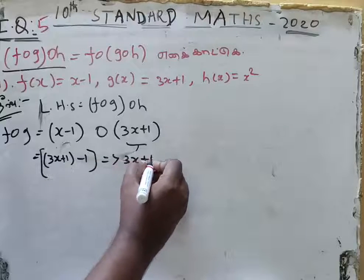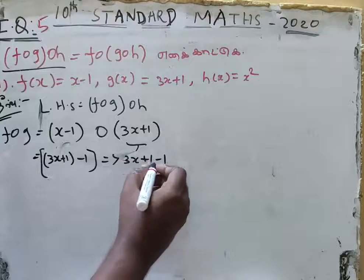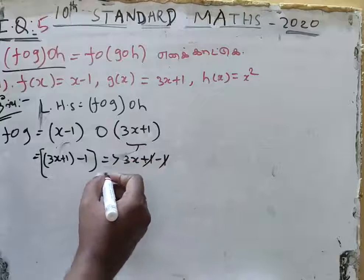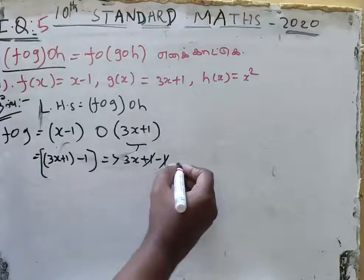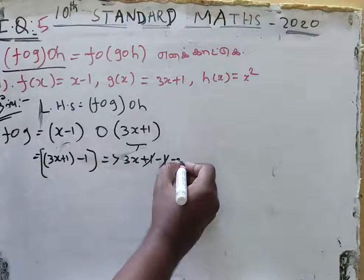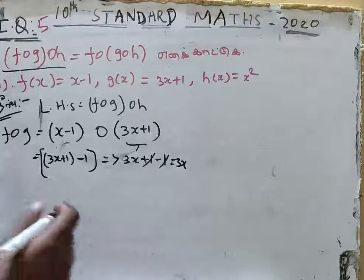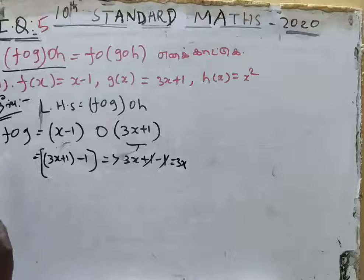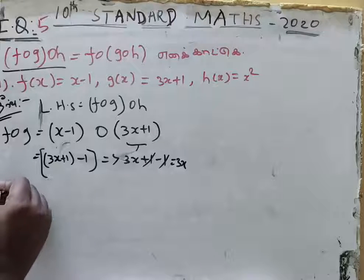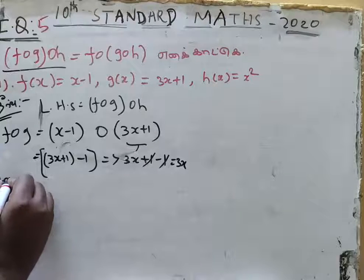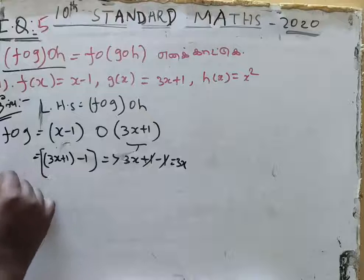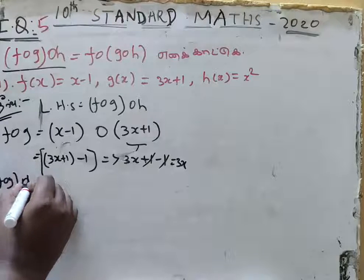3x plus 1 minus 1 — the plus 1 and minus 1 cancel, giving the value of 3x. So f of g of x equals 3x.